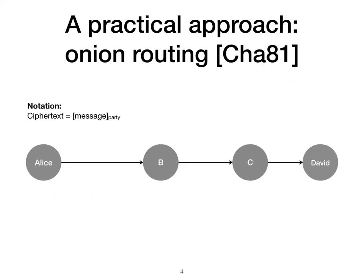One practical approach is to use onion routing, which was originally proposed by Chaum. To send a message to David, Alice first picks a routing path ending with David. In this example, the routing path is a sequence of parties Bob, Charlie, David. Then she forms a layered encryption object called an onion and sends it to the first party on the routing path, Bob.